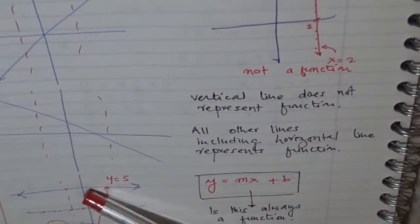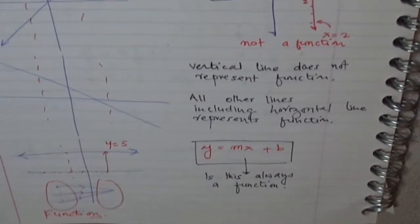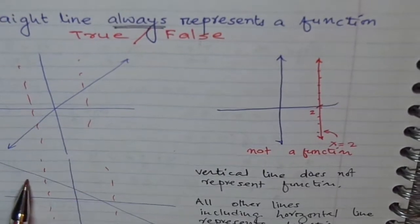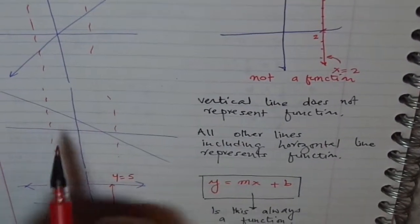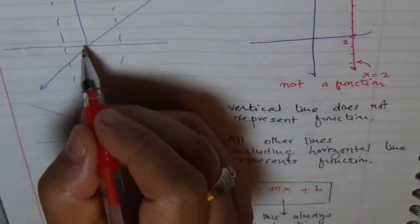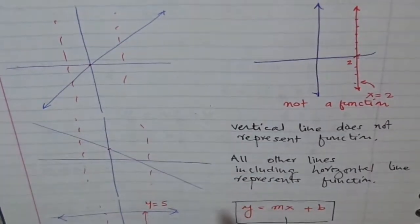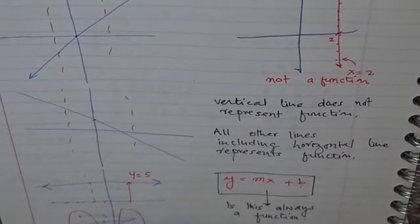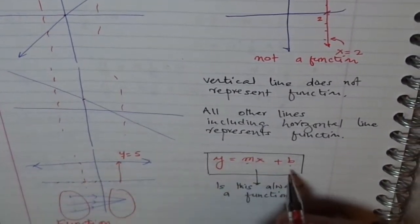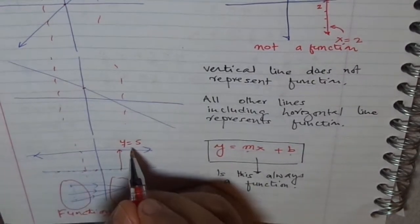Can this be represented by y equals mx plus p? Yes, it is. Here, m is positive, the slope. Here, the slope is negative. It has a y-intercept b, which is some value, not zero. Here, the y-intercept is zero. How about this? Here, the slope is zero and the equation is y equals b, in this case b is 5.